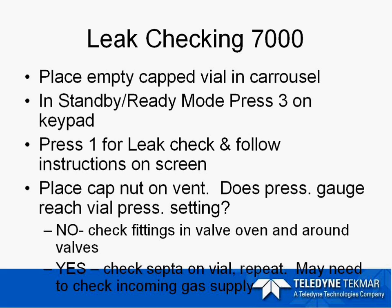When we leak check the 7000, we are going to place an empty capped vial into the carousel, press 3 on the keypad, and press 1 for leak check. There are on-screen instructions that tell you what to check. We are also going to place a cap nut on the vent valve head on the rear of the unit. Does the pressurized gauge reach the vial pressurization setting? If not, the most common place for checking for leaks is in the valve oven area, around the six-port valve, the fittings, the needles, and around the pressurized and vent valve. If the pressure gauge does reach the vial pressurization setting, that usually indicates a very poor seal with the septum on the vial — maybe the cap is not crimped correctly, so you may want to repeat the process with another new crimped vial.